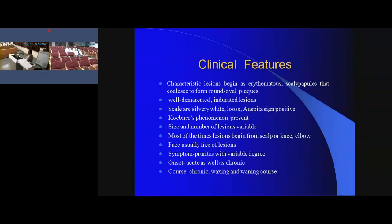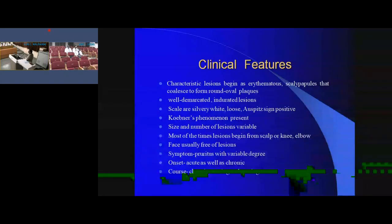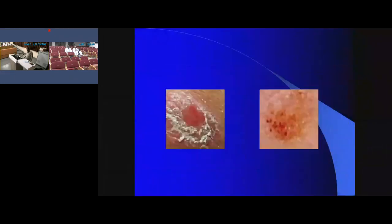In common psoriasis, one can appreciate Auspitz sign, where you remove the scales from the surface of the lesion using a glass slide by detaching them. After removing the scales, one can find pinpoint bleeding points beneath the scales. That is known as a positive Auspitz sign.